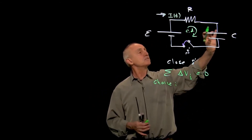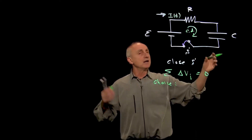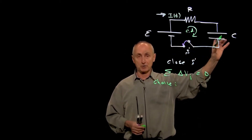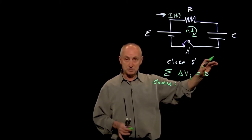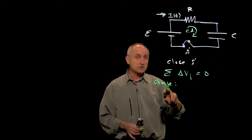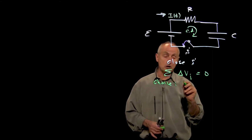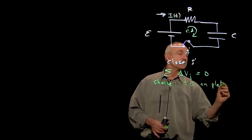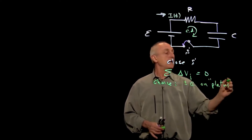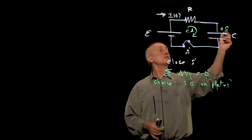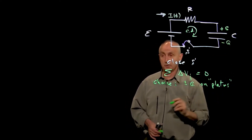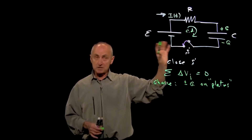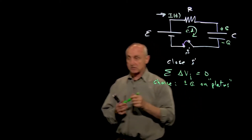Capacitors can be quite complicated. The symbol is just an illustration of a parallel plate capacitor, but this doesn't have to be a parallel plate capacitor at all — it's just a symbol that we use. Our choice is to put charges plus or minus q on these plates. So here, I'll choose plus q and minus q. Those are our conventions, but we have some consistency conditions.